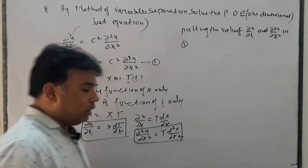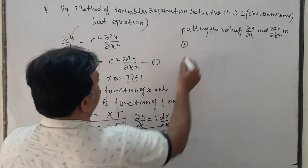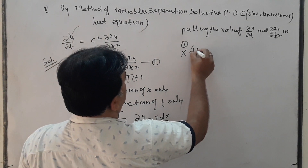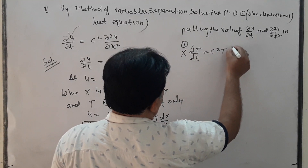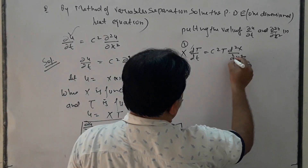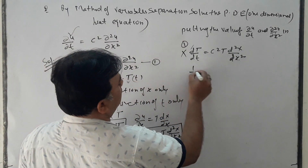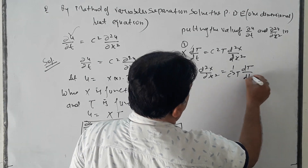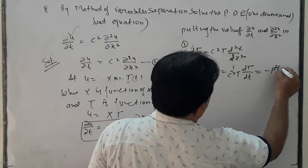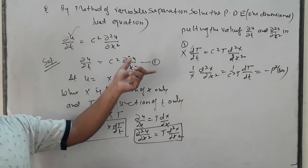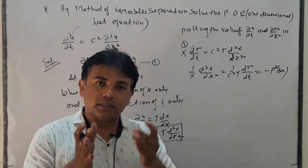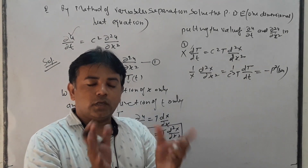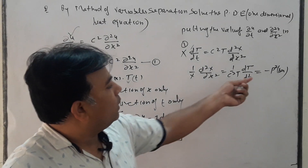Putting the values of ∂u/∂t and ∂²u/∂x² into the first equation: X · dT/dt = c² · T · d²X/dx². Applying variable separation: (1/X) · d²X/dx² = (1/c²T) · dT/dt. We let this equal minus p², because in the previous wave equation lecture we also used minus p² — since the square root of minus p² is pi, which is always imaginary.